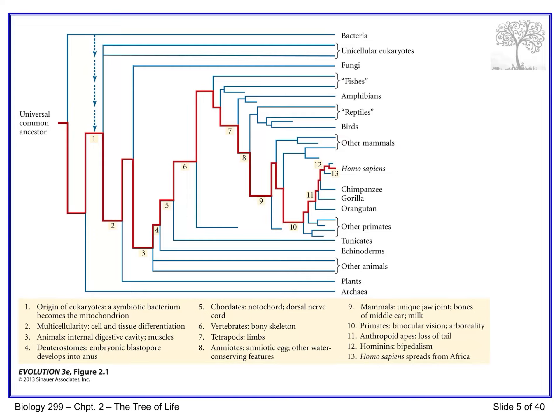This process of reconstructing evolutionary trees based on extant organisms is referred to as inferring phylogenies — inferring what must have happened based on current evidence. Measurement of the degree of similarity or difference between organisms allows reconstruction of the branching history that produced those taxa. The major assumption is that species become progressively more different from one another through time: fewer differences indicate more closely related species, while many differences indicate more distantly related ones.